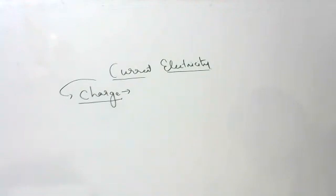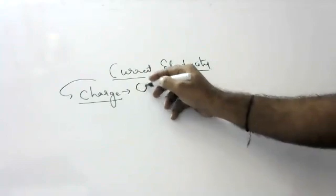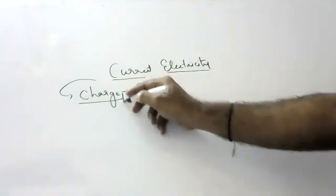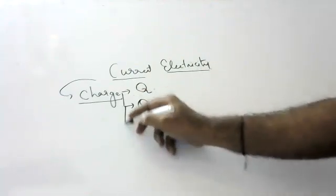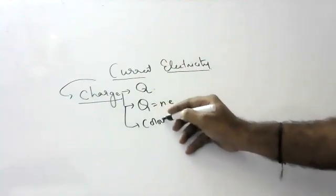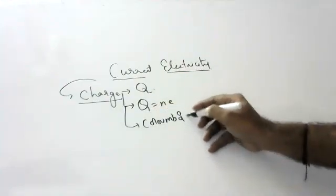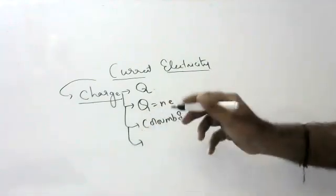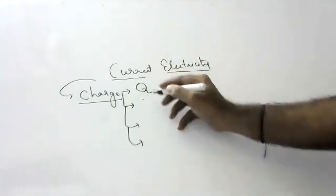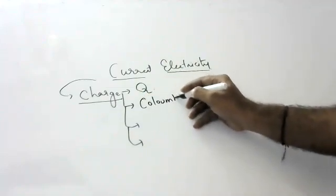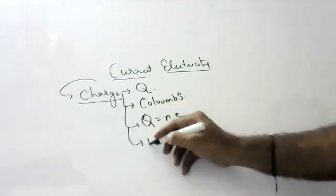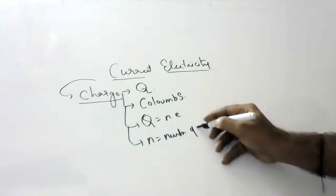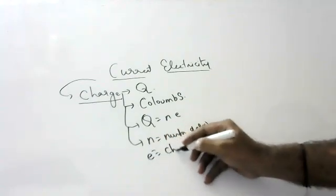Coming to charge — charge is denoted by Q. The formula for charge is Q is equal to NE. The units for charge are Coulombs. So charge is denoted by Q, its units are Coulombs, and the formula is Q equals NE, where N is the number of electrons and E is the charge of each electron.